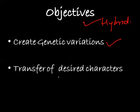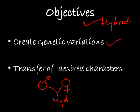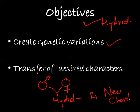The second objective is the transfer of desired characters. The two parents may have different characters, and when they are combined together, the F1 generation has a new character set. To obtain this type of desired character combination, we do hybridization.